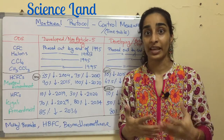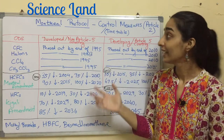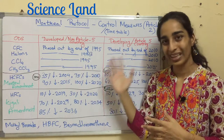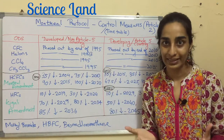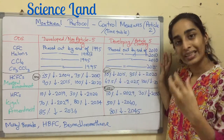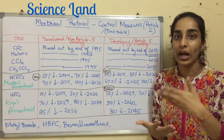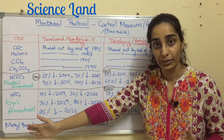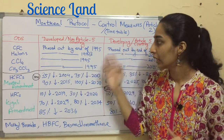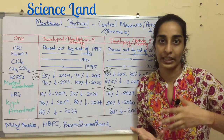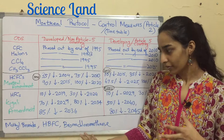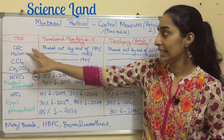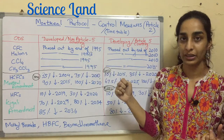Let's talk about the timetable given by Montreal Protocol, also known as control measures — essentially Article 2 of Montreal Protocol. Developed countries are known as non-Article 5 countries, and developing countries as Article 5 countries. CFCs were phased out by end of 1995 in developed countries, and by end of 2010 in developing countries. Halons were phased out by 1993 in developed countries and by end of 2010 in developing countries.